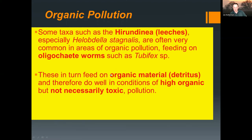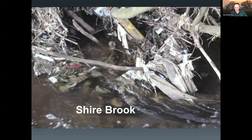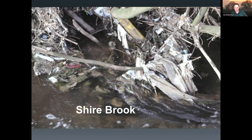Organic material and detritus is a source of nutrients coming into water bodies, and some organisms do well where there's high organic but not necessarily toxic pollution. Nutrients go through the system, and if organisms can tolerate the low oxygen levels they can do quite well, but you get a very limited food chain. Looking again at the Shirebrook — before intervention in the 1980s, it was essentially receiving primary-treated sewage, basically raw sewage sifted through a big grate, with the rest pouring into the stream.